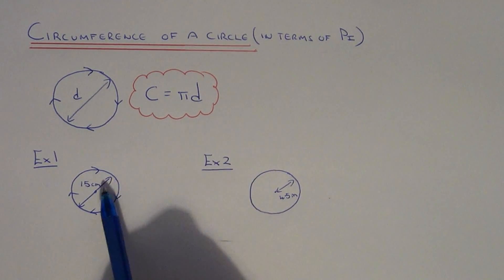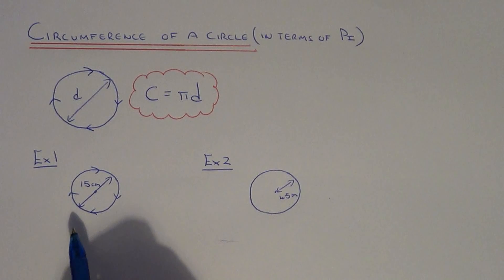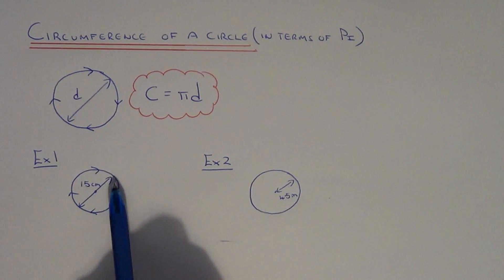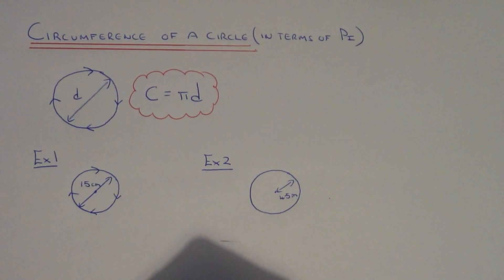Let's apply this formula to the two examples here. In example one, we need to work out the circumference, leaving our answer in terms of pi. So we're writing it as an exact answer.